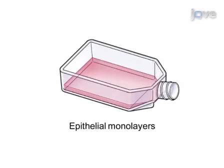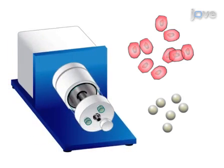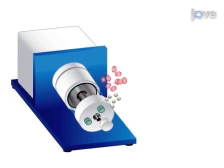First, epithelial cells are cultured to a confluent monolayer in a tissue culture flask, harvested, and then combined with microcarrier beads in the STLV bioreactor.